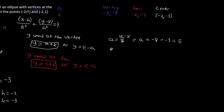Then for c, using the foci coordinate, rearranging gives c = y_foci − k. Plugging in: y_foci is −7, and k is −3, so c = −7 − (−3) = 4. That checks out — the distance between −3 and −7 is 4, which is the definition of c: the distance from the center to a focus.